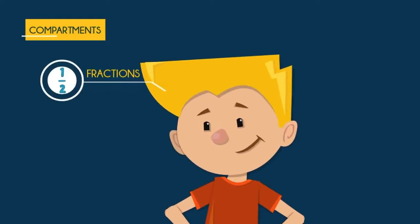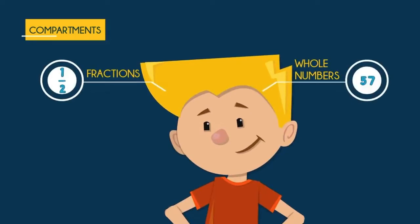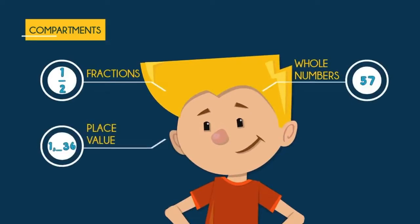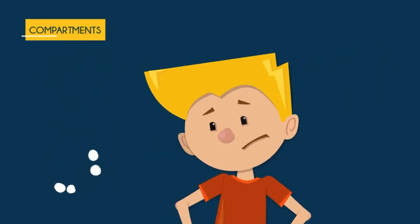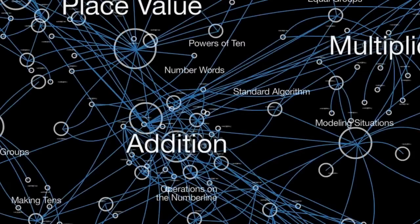Fractions over here, whole numbers over there, place value goes someplace else. The problem with thinking like that is that there's no connection. When we get students to really think about the math, to consider the concepts in relation to the other things that they know, we can help them take a list of information and make it into a web of knowledge.